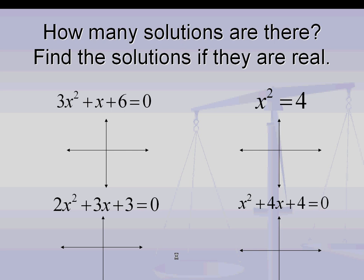I want you to graph each one of these parabolas and see how many solutions it has. Does it have 1, 2, or none? And if it has 1 or 2, then actually find out where they are using your second trace zero feature. Pause the video until you're ready.